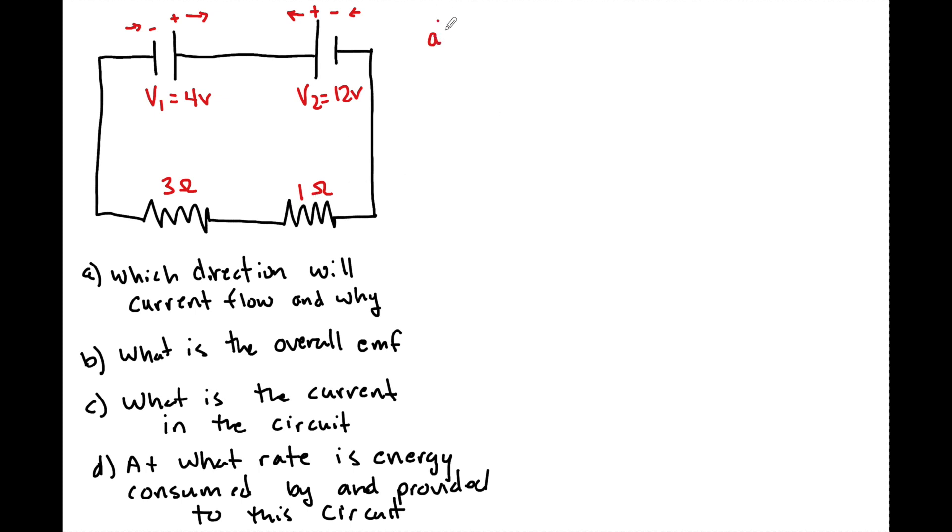So when we look at part A, it says which direction will the current flow? Now it's a very simple explanation. The current is going to flow this way. This is going to be the current flow of this circuit. And the reason why is simply because V2 is greater than V1.